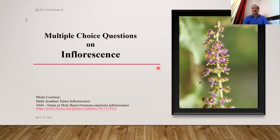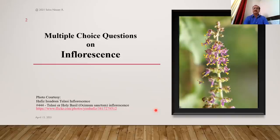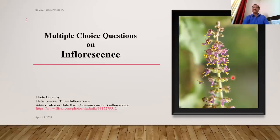Just like flowers have a central axis differentiated into two parts — the upper thalamus bearing floral leaves (calyx, corolla, androecium, gynoecium) and the lower pedicel (stock of the flower) — similarly, the main axis of inflorescence has an upper rachis and a lower peduncle (stock of inflorescence). One more difference: sometimes this inflorescence is a branched structure.